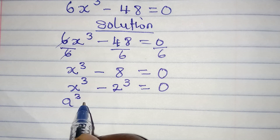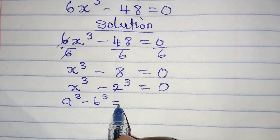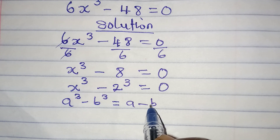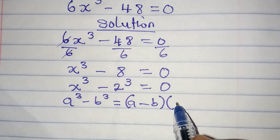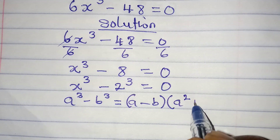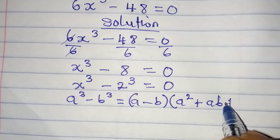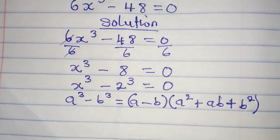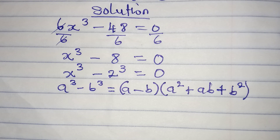If you have a to the power of 3 minus b to the power of 3, this is the same thing as a minus b, and then in brackets we have a squared plus ab plus b squared. This is the formula we will use.